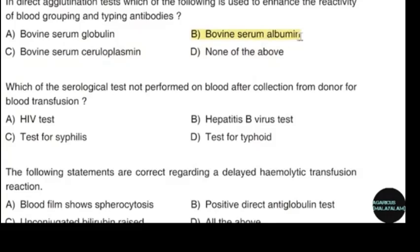Which of the serological tests is not performed on blood after collection from a donor for blood transfusion? Correct answer: option D — Test for typhoid.